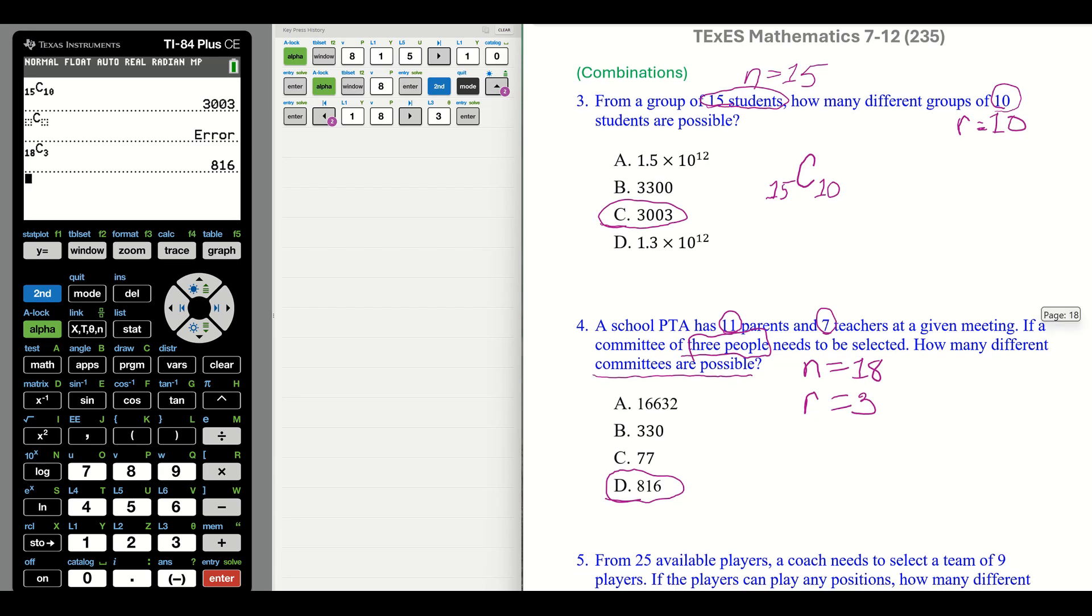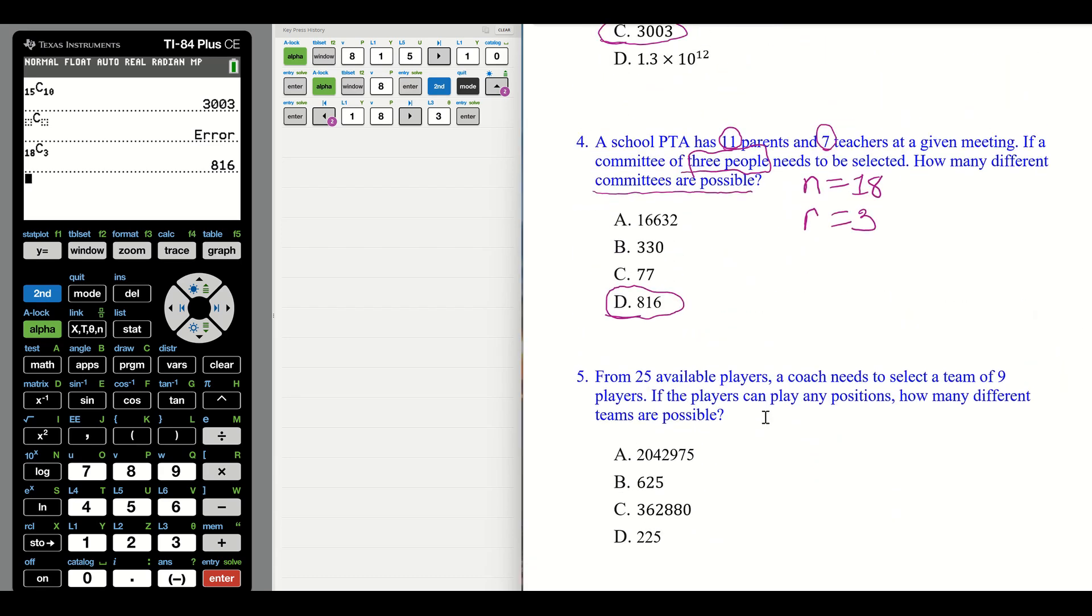Number five: From 25 available players, a coach needs to select a team of nine players. If the members can play any position, that's important, that makes it a combination. How many different teams are possible? Because we're not talking about specific positions, anyone can play any position, then we know we have a combination.